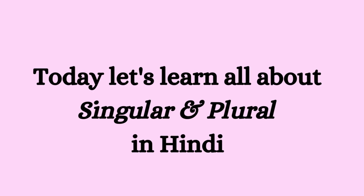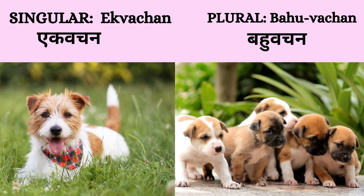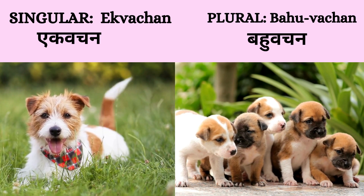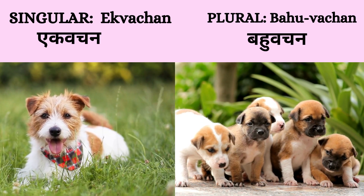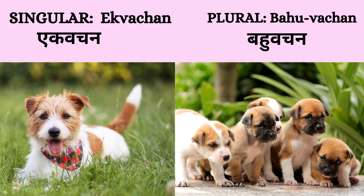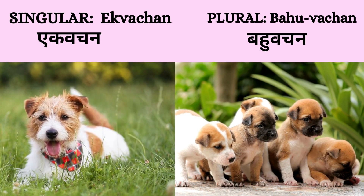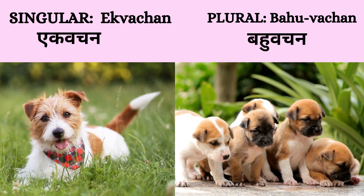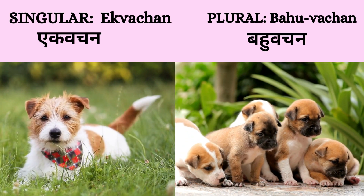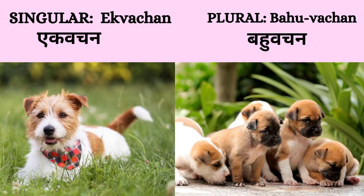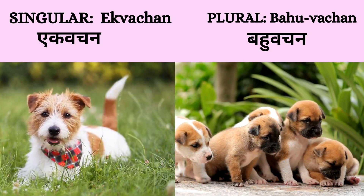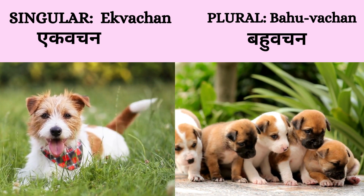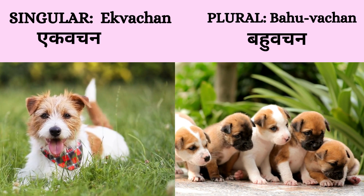Firstly, singular and plural indicate the number of things in terms of one or many. In Hindi, singular is known as ekvachan. From our knowledge of numbers, we know that ek means one. So ekvachan means one single person, animal or thing.